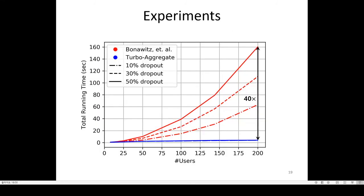Here are experimental results over Amazon EC2 Cloud. There are three key observations. First, we demonstrate that the total learning time of Turbo Aggregate is almost linear in the number of users. Second, the total learning time of Turbo Aggregate remains stable as the dropout rate increases. Third, Turbo Aggregate provides a 40 times speed-up over the state-of-the-art.